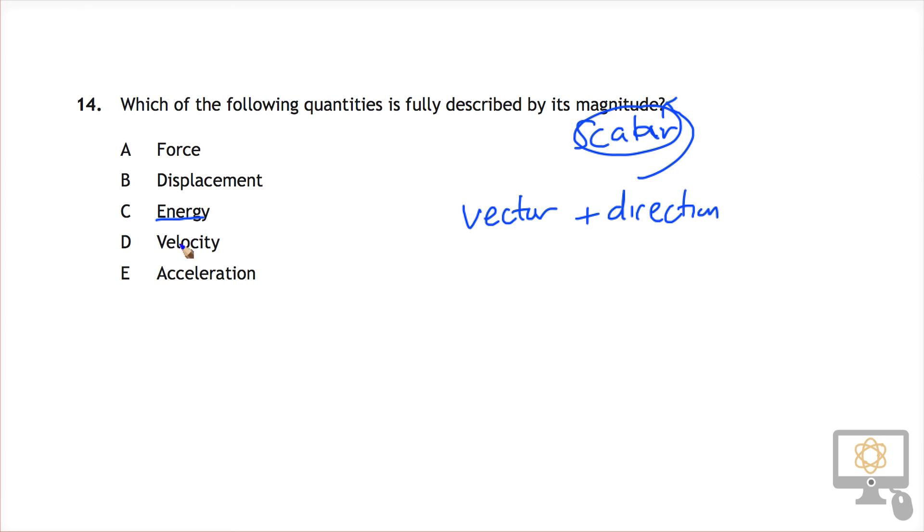Velocity and acceleration also both have direction. So C, energy, is described fully by its magnitude alone.